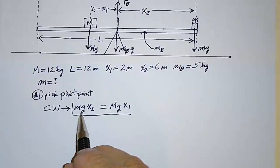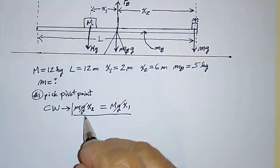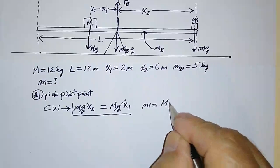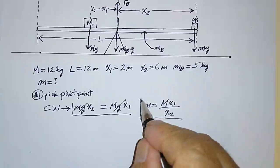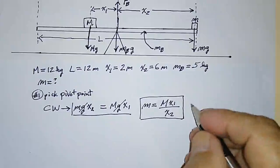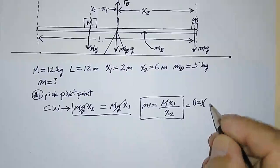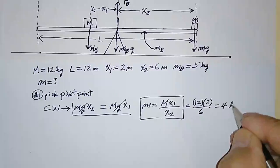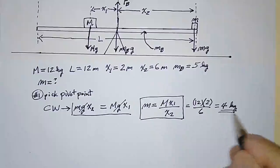So I have: mg · x2 = Mg · x1. Solving for little m: there's a g on both sides, so those cancel. Dividing both sides by x2 gives m = M · x1 / x2. Plugging in numbers: M is 12 kg, x1 is 2 m, x2 is 6 m. So m = 12 × 2 / 6 = 4 kilograms.